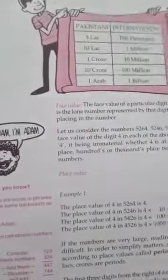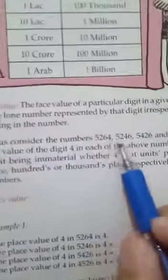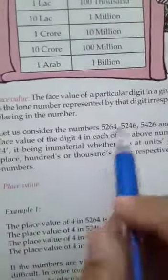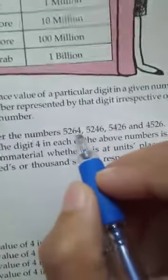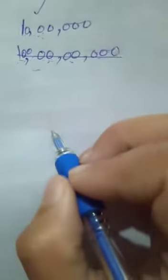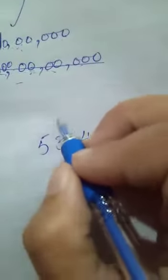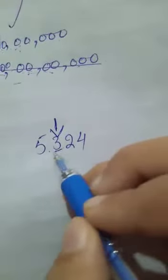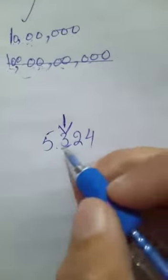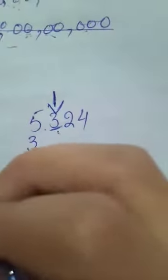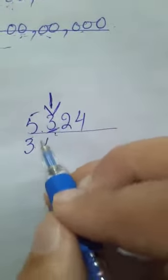Next we will read face value and place value. Face value — what is it? For example, if a digit is 4, its face value is just 4. And place value — for example if you have the number 5, 3, 2, 4 and you want the place value of 3: first you have to identify its position, then multiply by the place. To find place value of 3, you multiply by its positional value — for example if it is in hundreds place, multiply by 100.